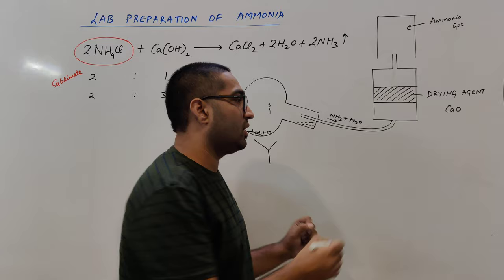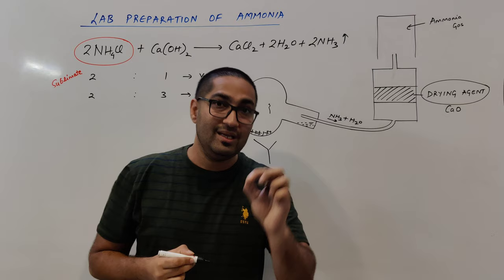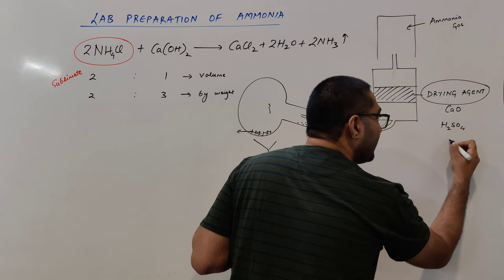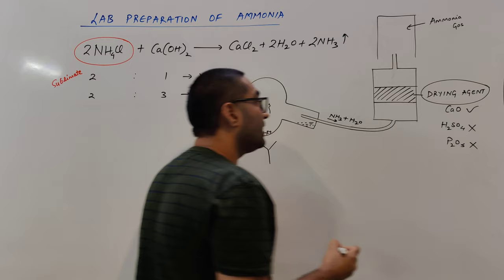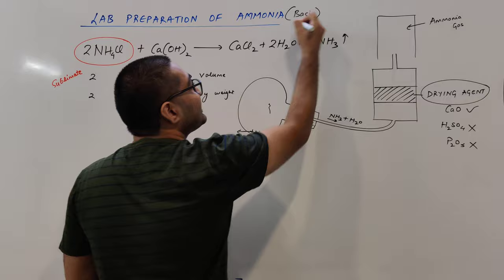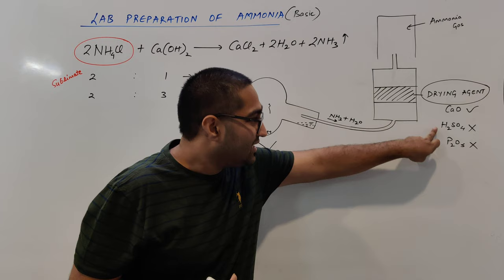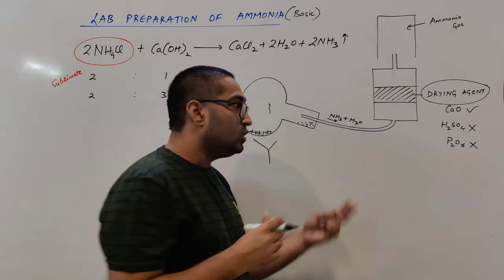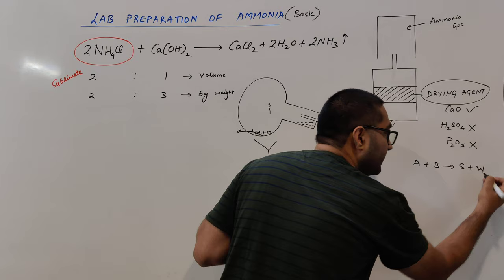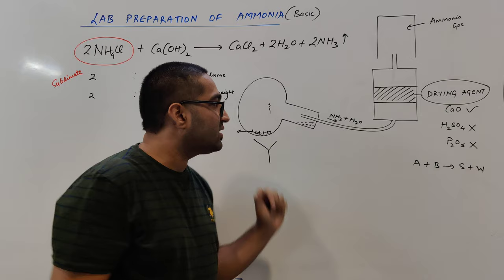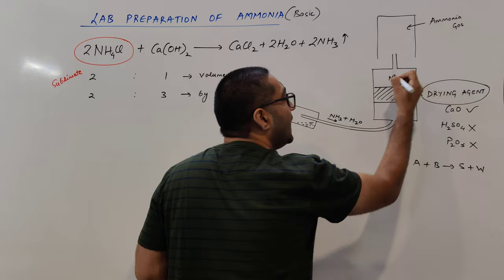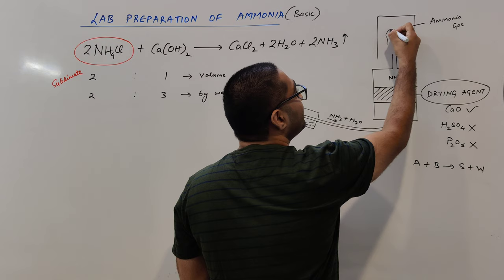There is a drying agent used — quick lime, CaO. We also have other drying agents like H2SO4 and P2O5, but we don't use those for ammonia. We dry ammonia with CaO because ammonia is a basic gas — it has a lone pair, making it a Lewis base. H2SO4 and P2O5 are both acidic drying agents; if we try to dry a basic gas with an acidic drying agent, acid plus base will combine to form salt and water, consuming the ammonia. So these two drying agents fail, and CaO is used instead.